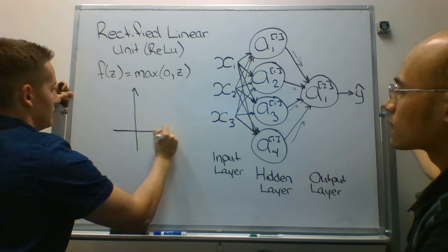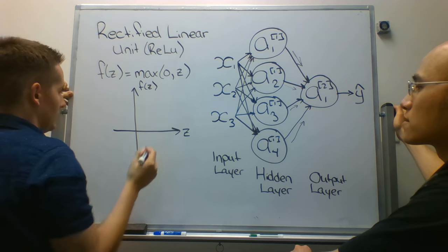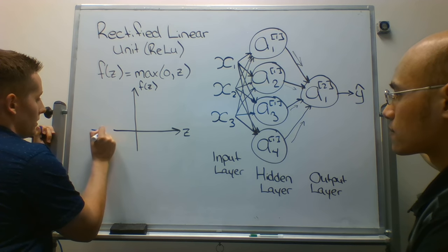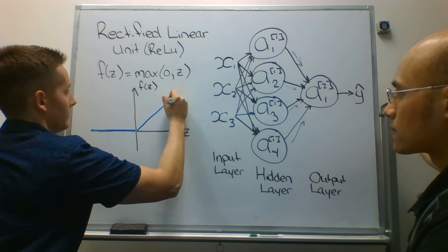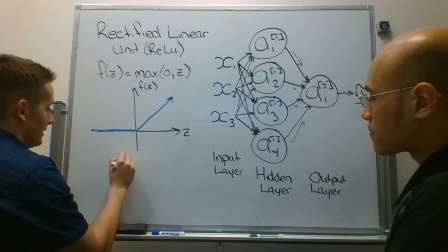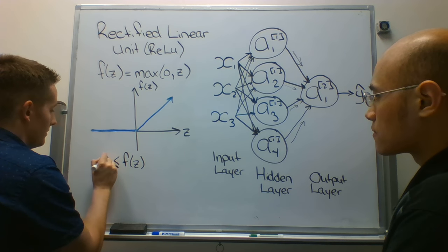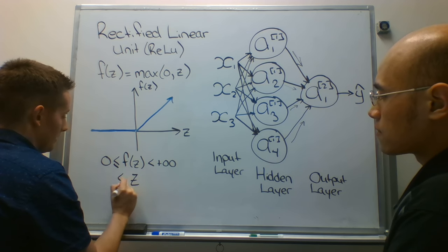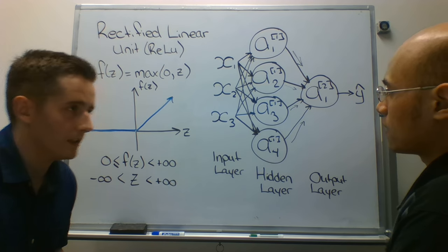And, let's draw this, z, I put my f crosses, f of z, and this follows, it's always 0 until it goes past 0, and then it goes up at a 45 degree angle, and it's just equal to z after that point. So, f of z itself is bounded by, it's greater or equal to 0, and it's less than positive infinity, as z is greater than negative infinity, and less than positive infinity.